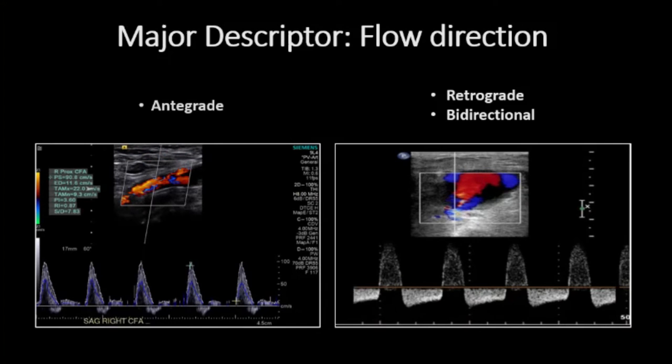Taking a focused view of flow direction, ultrasound detects antegrade flow, retrograde flow, and bidirectional flow. When the ultrasound transducer is correctly oriented, the baseline serves as the determinant for antegrade versus retrograde flow. The left image demonstrates a standard display of normal net antegrade flow in a peripheral artery. On the right, a unique bidirectional flow pattern is captured, with above and below baseline signal evident.